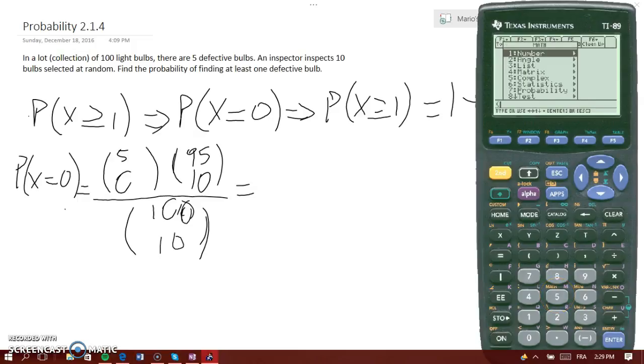You can copy this and then paste. So now you have 5 choose 0, which will be 5 comma 0, then close parentheses.